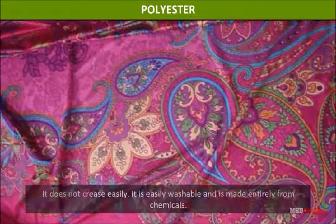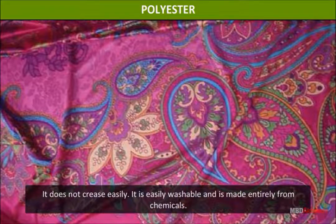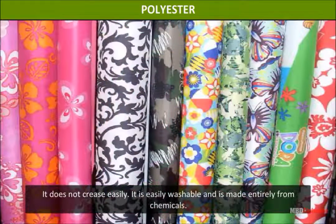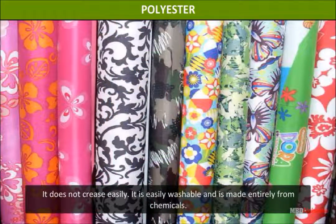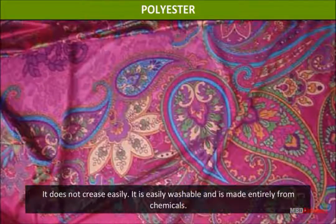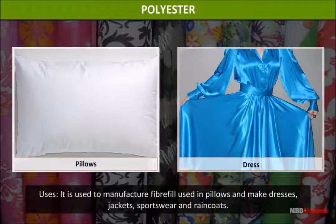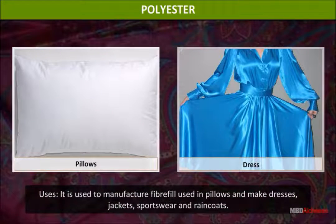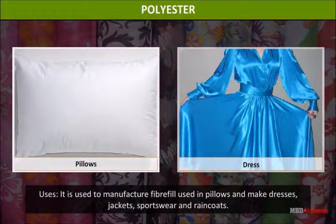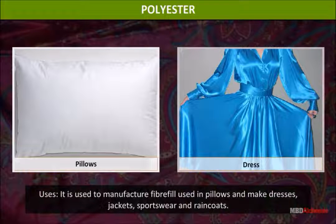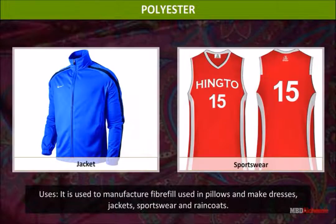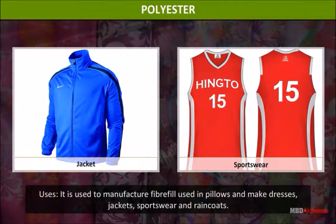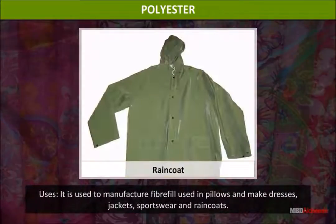Polyester: Polyester does not crease easily, is easily washable, and is made entirely from chemicals. Uses: it is used to manufacture fiber fill used in pillows, and to make dresses, jackets, sportswear, and raincoats.